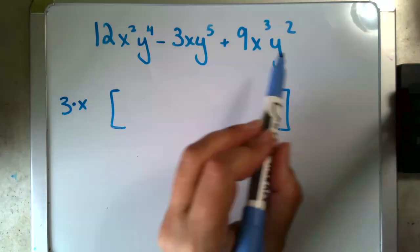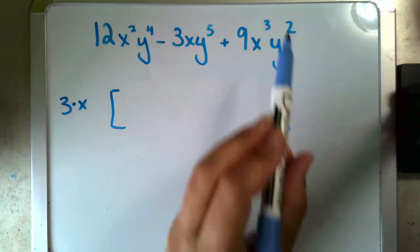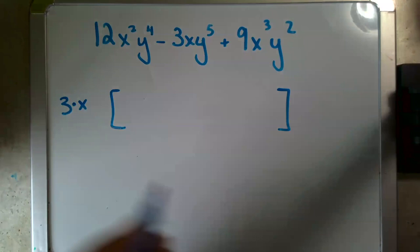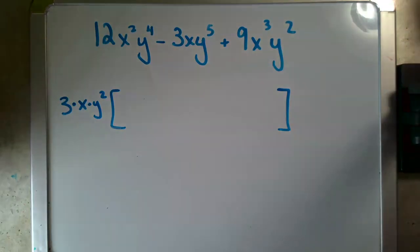y to the fourth, y to the fifth, y to the second. Again, it's going to be my lowest degree of y. y to the second can come out of each of those. And so that means that my greatest common factor of these three terms is 3xy squared.